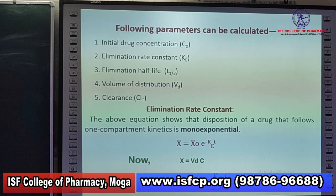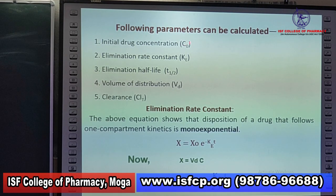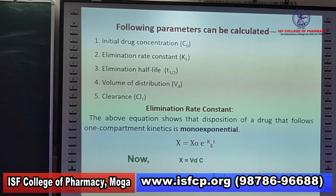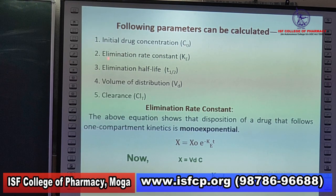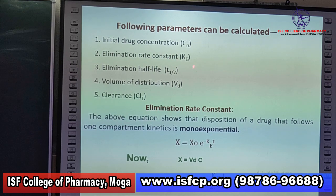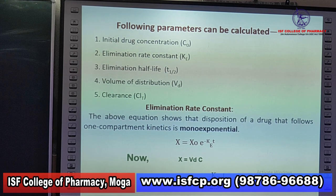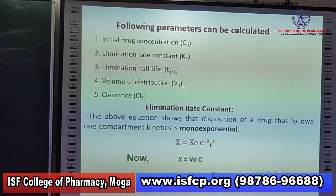The following parameters can be calculated: first, initial drug concentration C₀; second, first-order elimination rate constant ke; third, elimination half-life t½; fourth, volume of distribution Vd; and fifth, total systemic clearance CLT.